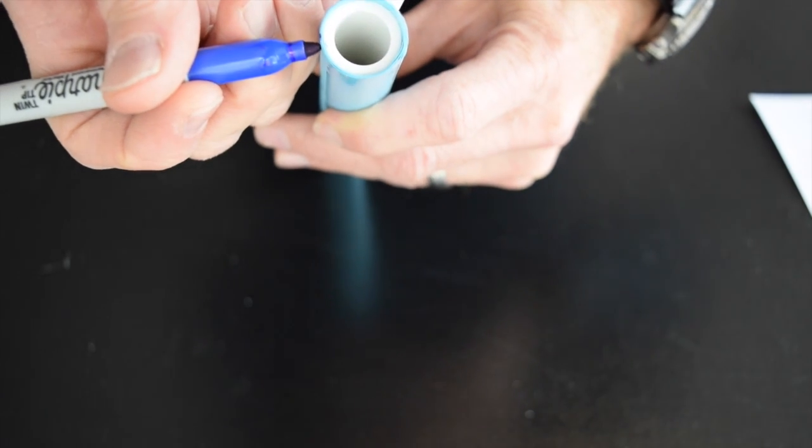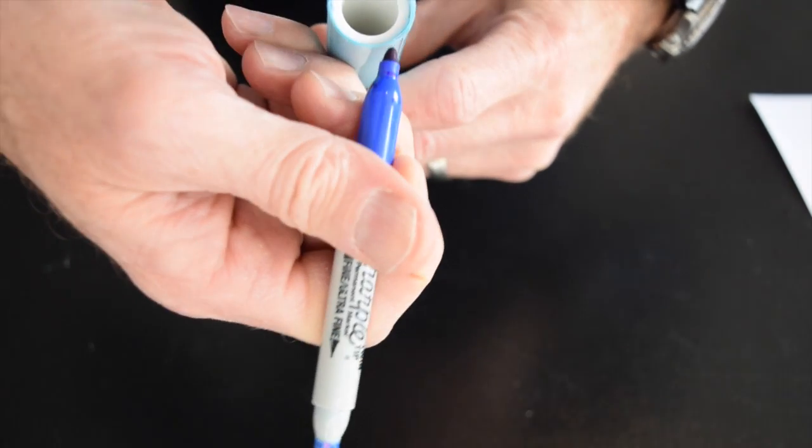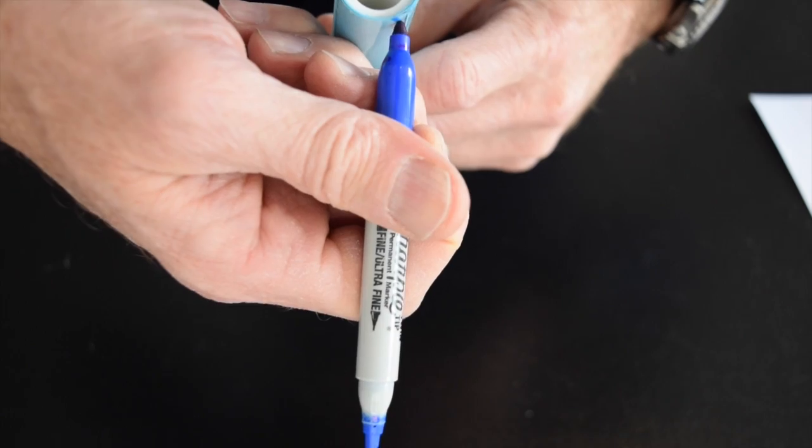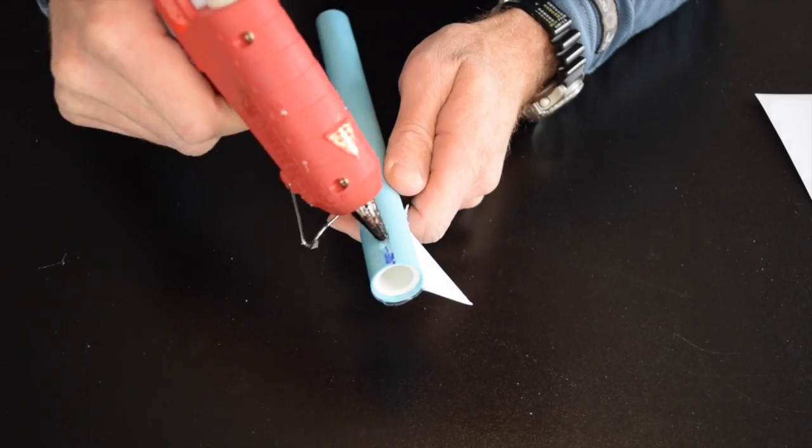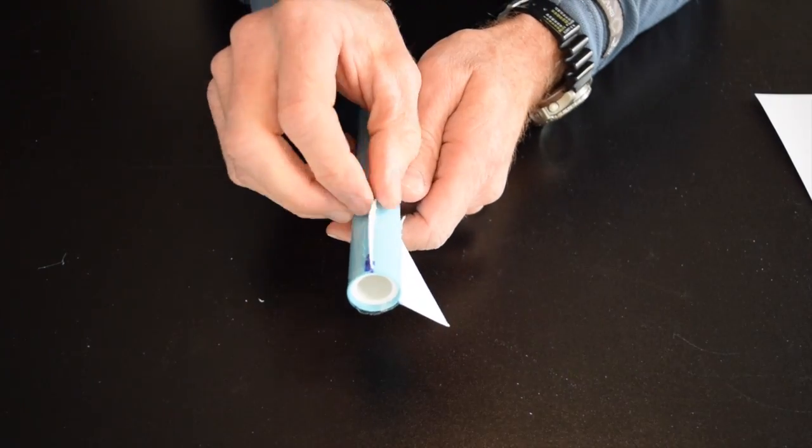The remaining fin locations are spaced evenly around the rocket body and marked to make it easier to know where to lay down the glue. Then the fins are attached the same way as the first fin.